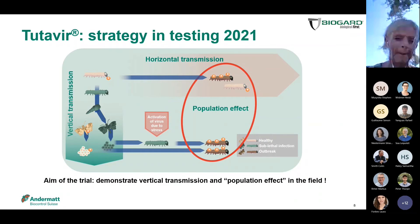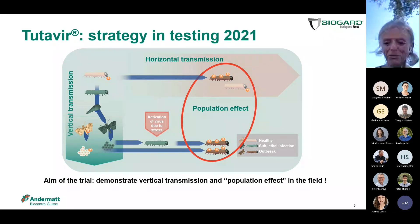You know this slide very well because Andermatt produced it for all of us. We wanted to show the growers the population effect, because Tuta absoluta on tomato is our main problem, and all the other products that are used usually control also all the other Lepidoptera pests.